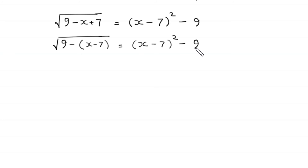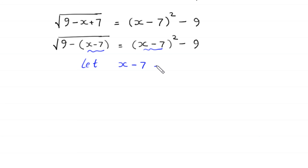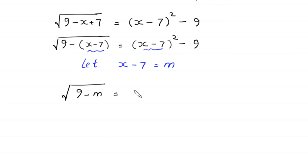Now we notice that (x minus 7) appears repeatedly in the equation. So we let m equal (x minus 7). The equation then becomes: the square root of (9 minus m) is equal to m squared minus 9.